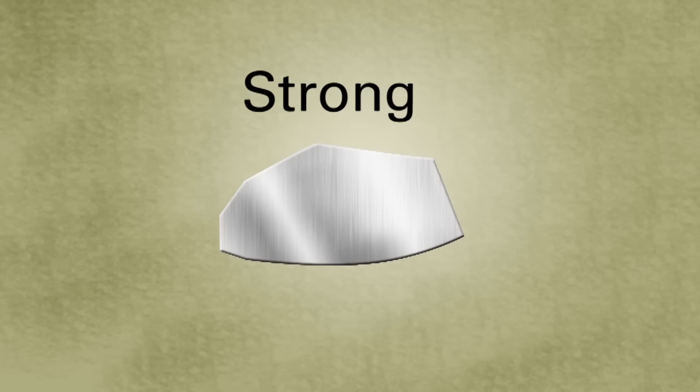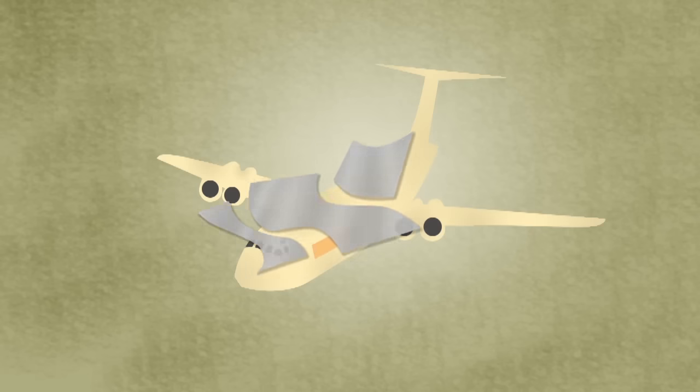Aluminum is also used for the bodies of planes. Aluminum is less dense than many metals, making it light. It can also be made stronger by making it into an alloy. This aluminum alloy can be bent easily to form the body of the plane.